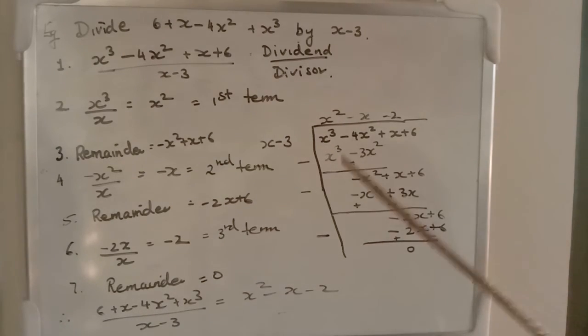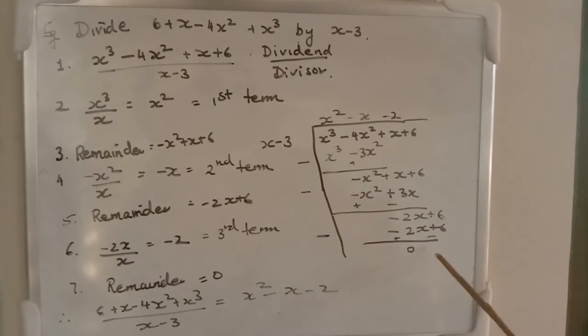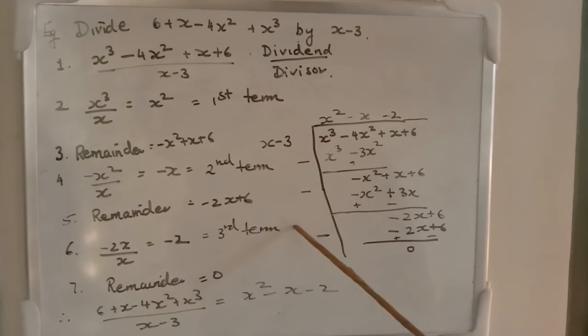So, we will go on until we get 0 or a degree which is less than the divisor. In this case, less than this is obviously 0. So, we should either get a constant or remainder 0. And the remainder we get is 0. And the quotient is x² - x - 2.